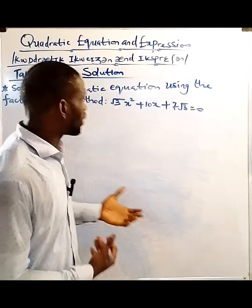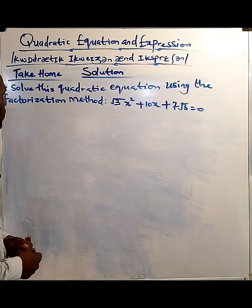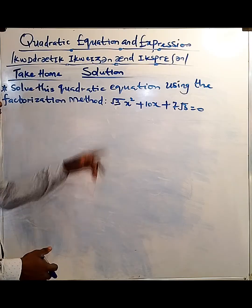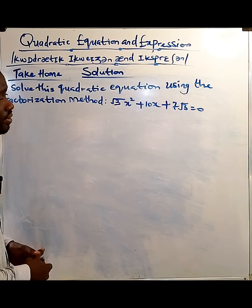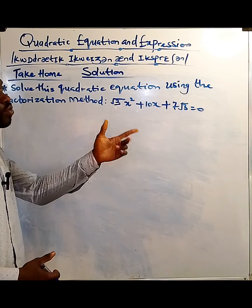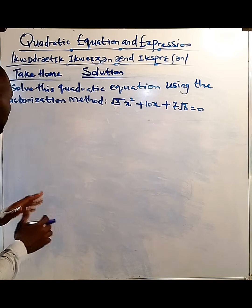So here was the question we were given. Solve this quadratic equation using the factorization method. Now look at the equation: √3x² + 10x + 7√3 = 0. Now, of course, how do we factorize this? This question is very simple and direct.